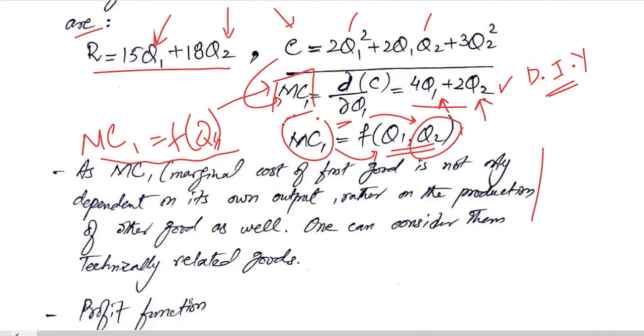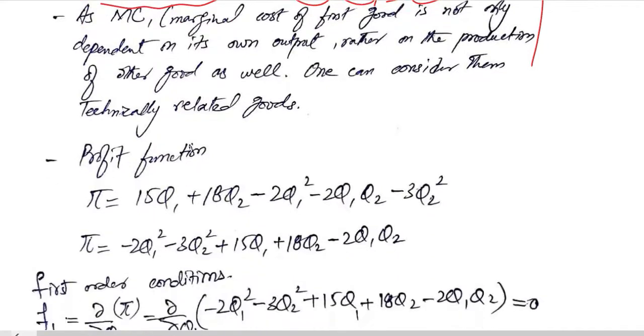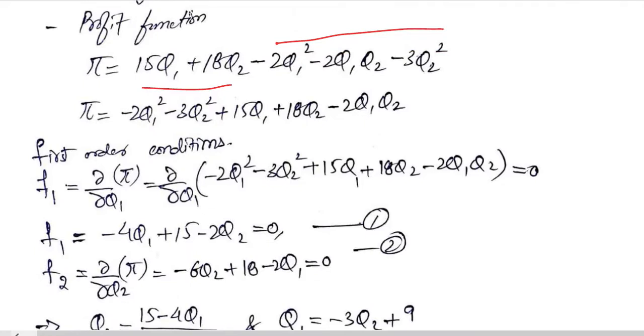So this is the same thing that I have told you and it is written in words that you can read after pausing the video. Now we talk about the profit function; definitely it is the difference of the revenue function and the cost function. We can rearrange it and come up with this expression in which the squares are coming first, then the linear terms, and then the cross term.